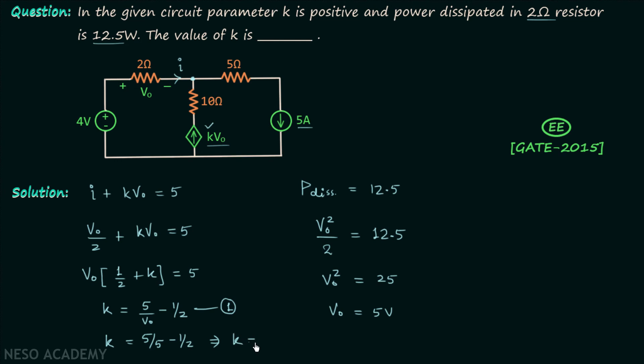So we have k equal to 5 divided by 5 minus 1/2. From here we will have k equal to 1 minus 1/2, so finally we have k equal to 1/2, or we can say k is equal to 0.5. So the value of k is 0.5.